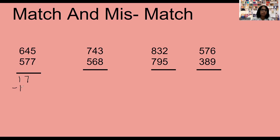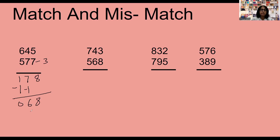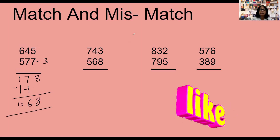Since it's a mismatch, write minus 1 here. Again, it is also a mismatch — upper number is smaller than the lower number — so write minus 1 here as well. Then the complement of 7 is 3, and 5 plus 3 is 8. Now: 1 minus 1 is 0, 7 minus 1 is 6, and 8 is the last digit. So 68 is the answer.